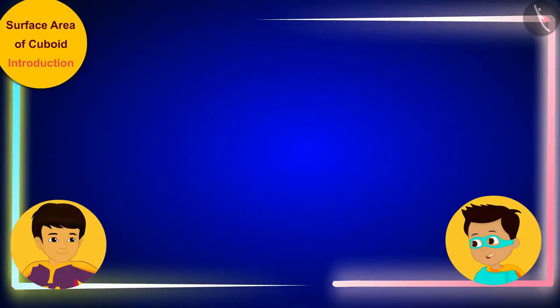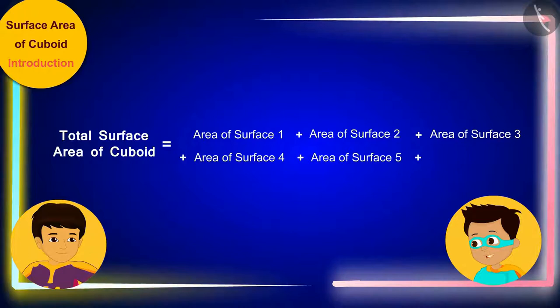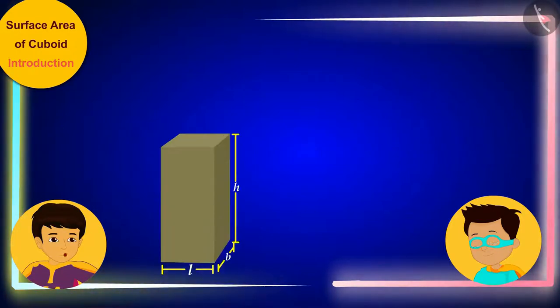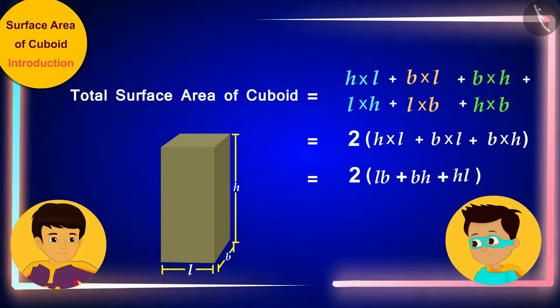Manas, do we have to use such a lengthy process every time to find the total surface area of any cuboid? I am starting to feel dizzy only by the thought of it! Ha ha ha! I know, Thomas! Let's write it down in a simple way and make a formula for the total surface area of the cuboid.